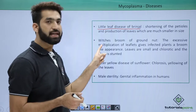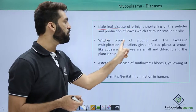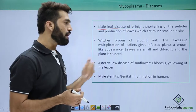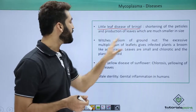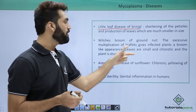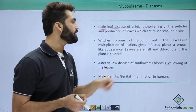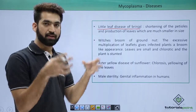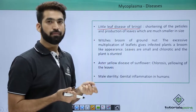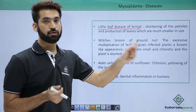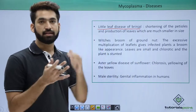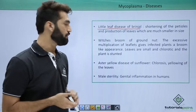The second disease is broom of groundnut. What happens in this disease is excessive multiplication of leaflets, which gives the infected plant a broom-like appearance. The leaves are smaller and chlorotic — meaning they turn yellow — and the plant is stunted, meaning the growth is stopped.